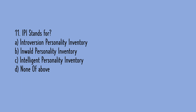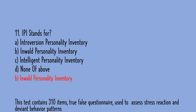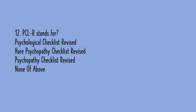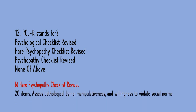MCQ 11: IPI stands for — option A: Introversion Personality Inventory, option B: Inward Personality Inventory, option C: Intelligent Personality Inventory, option D: none of the above. The correct answer is B, Inward Personality Inventory. This test contains 310 items, is a true/false questionnaire, and is used to assess stress reaction and deviant behavior patterns. PCL-R stands for — option A: Psychological Checklist Revised, option B: Hare Psychopathy Checklist Revised, option C: Psychopathy Checklist Revised.